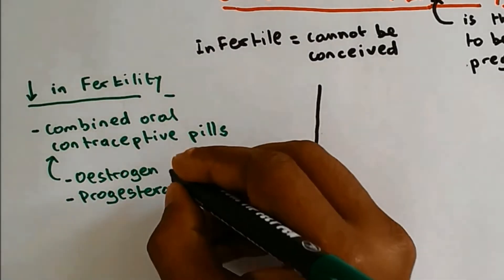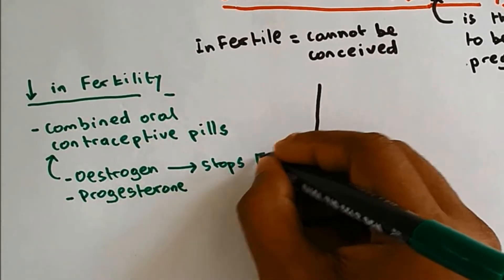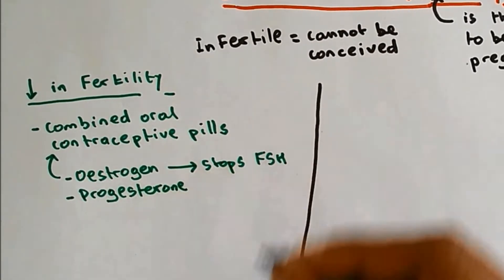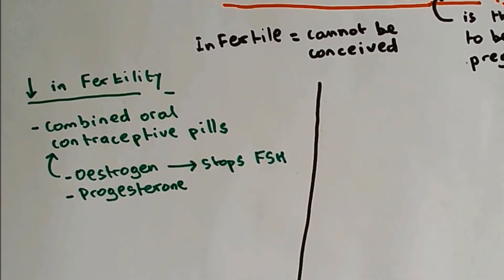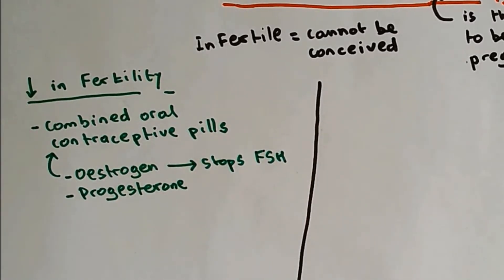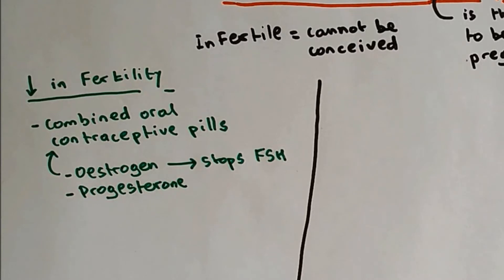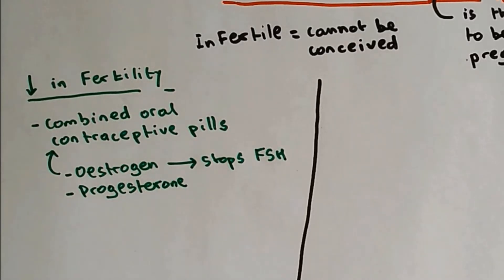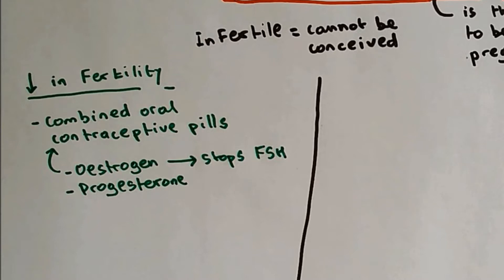This combined oral contraceptive pill contains estrogen and progesterone. Estrogen stops the production of FSH. We know that FSH is involved in the development of the egg, so if there is no FSH, the egg doesn't get developed, so it cannot be fertilized, and the woman cannot become conceived.